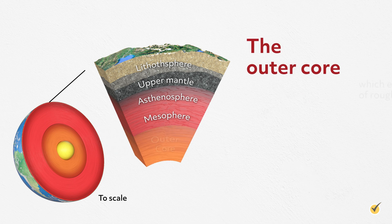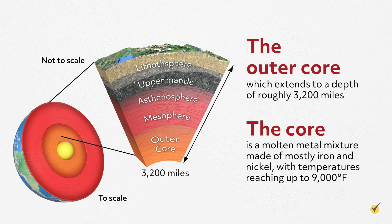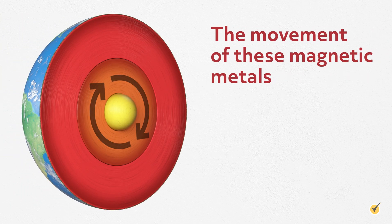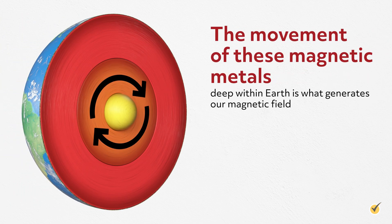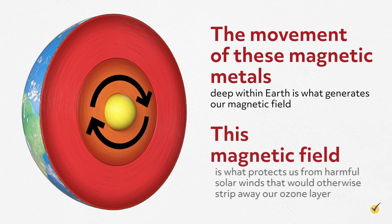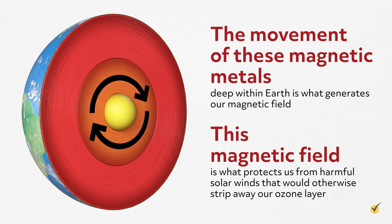Next up is the outer core, which extends to a depth of roughly 3,200 miles. The core is a molten metal mixture made of mostly iron and nickel, with temperatures reaching up to 9,000 degrees Fahrenheit. Iron and nickel are both magnetic. The movement of these magnetic metals deep within Earth is what generates our magnetic field. This magnetic field is what protects us from harmful solar winds that would otherwise strip away our ozone layer.